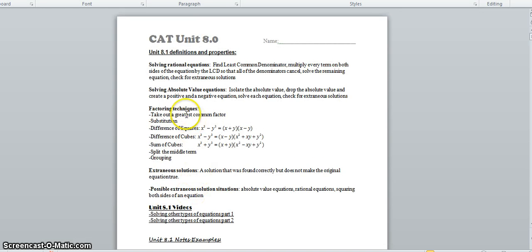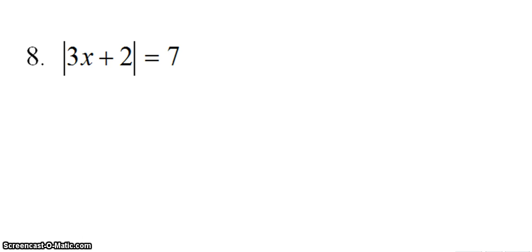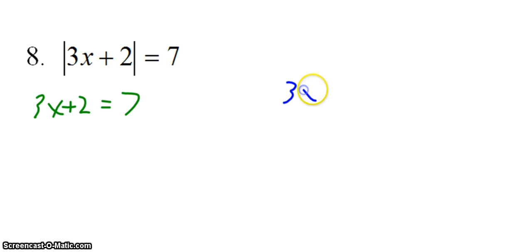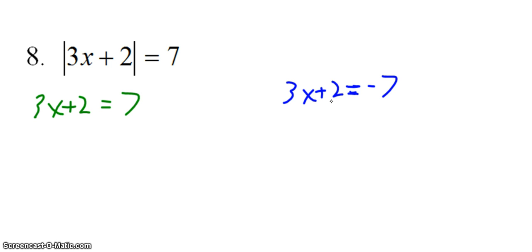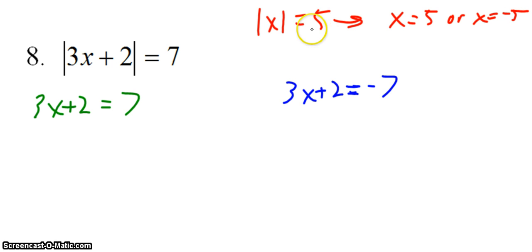With an absolute value equation, we want to isolate the absolute value, drop the absolute value, and create a positive and a negative equation, then solve each equation and check for extraneous solutions. Here the absolute value is already isolated, so we go right to creating a positive and a negative case. The positive case: literally just drop the absolute value. The negative case: drop the absolute value but multiply one side by negative one — so the seven becomes negative seven. Why do we do this? Because absolute value is a distance. If the absolute value of x equals five, that means x is five or x is negative five.